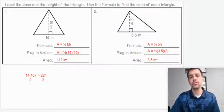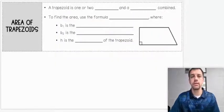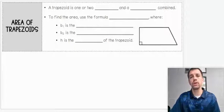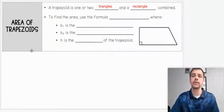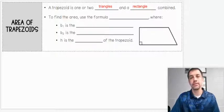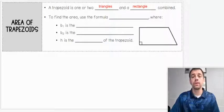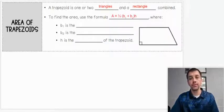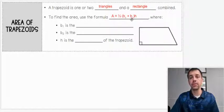Let's move on into trapezoids. A trapezoid is one or two triangles and a rectangle combined. Notice this image we have down here—it kind of looks like one rectangle and a triangle over on the right-hand side. So we have a different formula for this. To find area of a trapezoid, we're going to use the formula area equals one-half, and then in parentheses, you notice we have b sub 1 plus b sub 2 times the height.